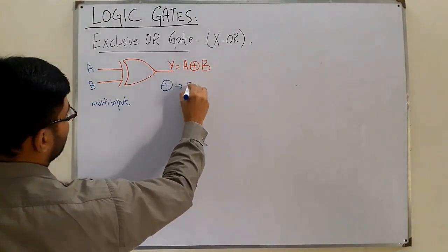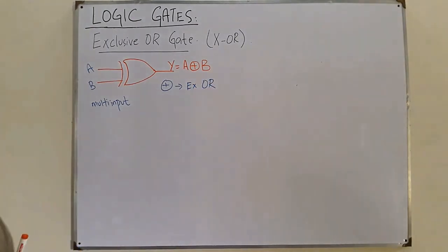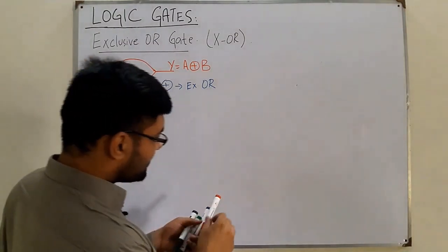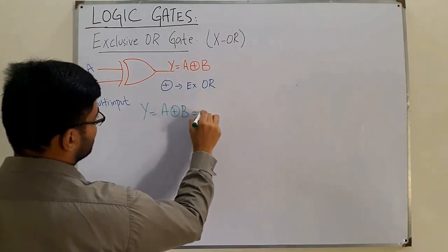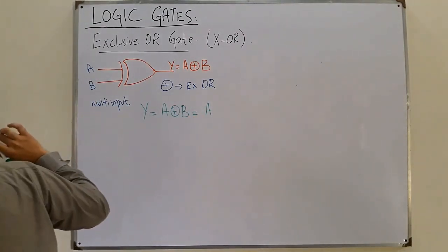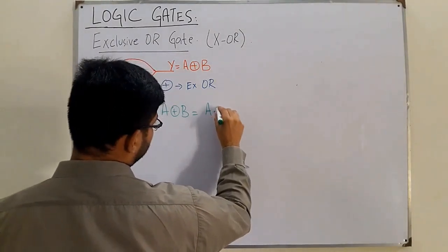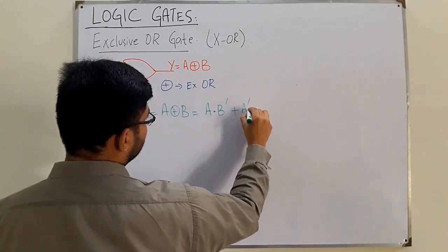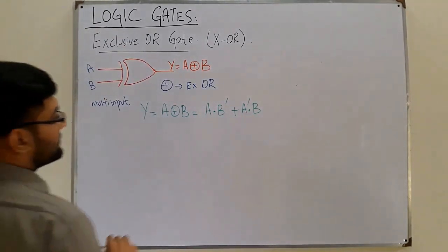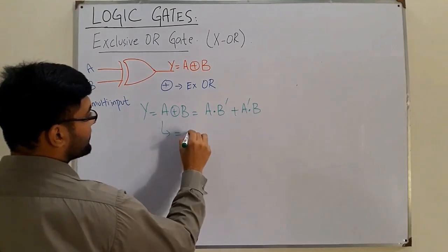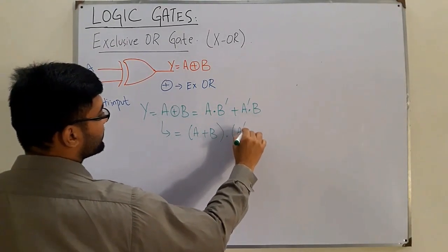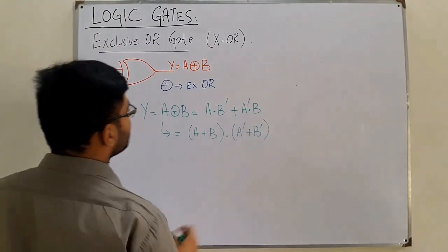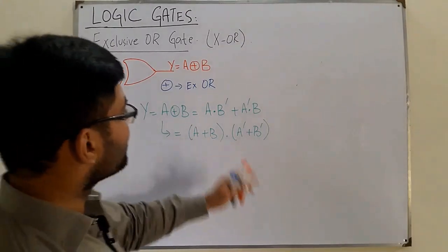The XOR operation is basically a combination: Y = A XOR B equals (A AND B_complement) OR (A_complement AND B). This is also equal to (A OR B) AND (A_complement OR B_complement). This is the inside circuitry of the exclusive OR gate.